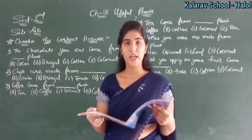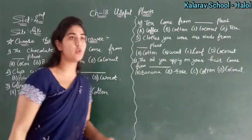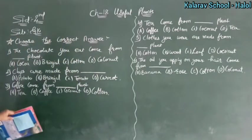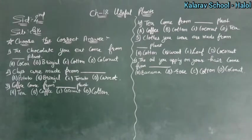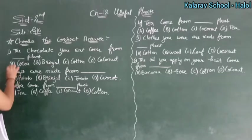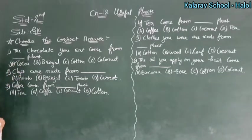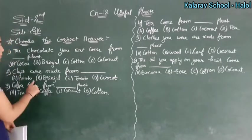Now let's do the classroom exercise. The chocolate you eat comes from which plant? It comes from the cocoa plant. The options given are: A) cocoa, B) brinjal, C) cotton, D) coconut. So the answer is cocoa.